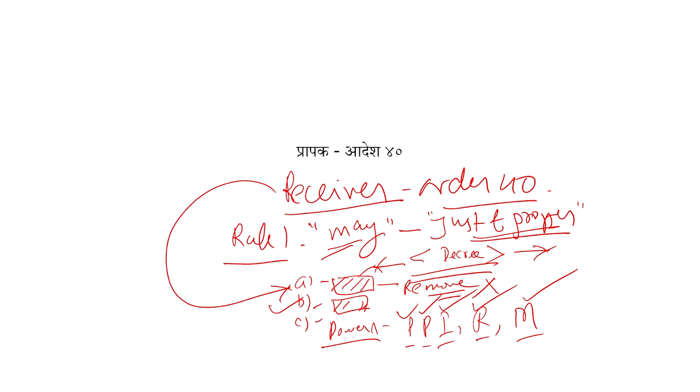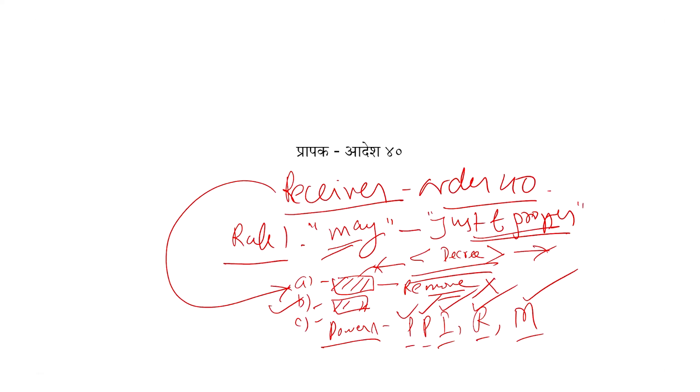Toh receiver ko is saare power ke saath receiver appoint kar diya jayega — yeh likha hua hai Rule 1 mein, Order 40 ke Rule 1 mein. Toh jab bhi aap receiver appoint karogi, court afla — usko kabhi bhi decree ke pehle ya decree ke baad, kabhi bhi court may, jab court think fit, just and convenient — court receiver ko appoint kar sakti hai. Aur receiver ko jab bhi appoint karogi, toh already agar koi possession mein toh usko hata diya jayega. Receiver ko possession dilwa diya jayega aur receiver ko ek kaam aur karna hai — yeh sara power assign kar diya jaayega: preservation, protection, improvement, management and realization.